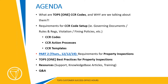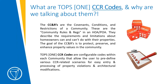What are TOPS One CC&R codes and why are we talking about them? The CC&Rs are the governing conditions and restrictions of a community — they are the community rules and regs in an HOA or POA. They describe the requirements and limitations about what homeowners can and can't do with their properties. The goal of the CC&Rs is to protect, preserve, and enhance property values in the community. The TOPS One CC&R codes are configurable codes within each community.